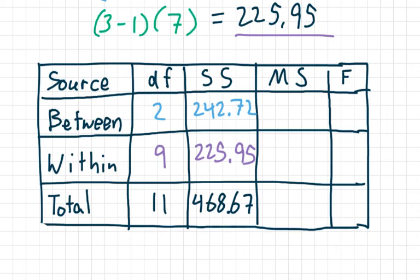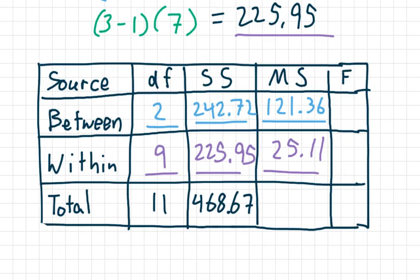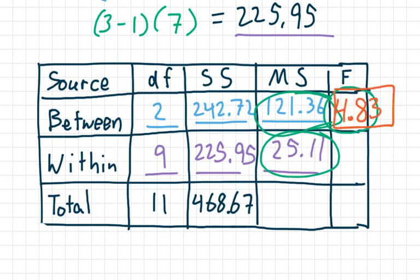The next thing is filling in the mean squares, the mean sum of squares. To fill in this blank, we're going to take the sum of squares and divide by 2. That gives us 121.36. Similarly, we're going to take 225.95 divided by 9, and that came out as 25.11. The last thing is we're going to calculate the F statistic. That is S squared divided by another S squared. We're going to take this value, 121.36, and divide it by 25.11. The end result is 4.83.